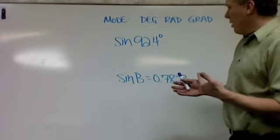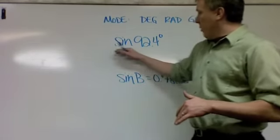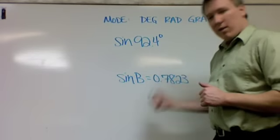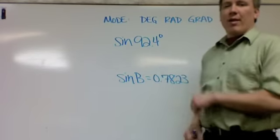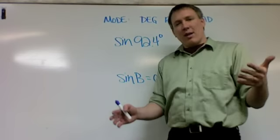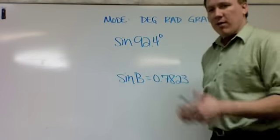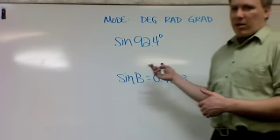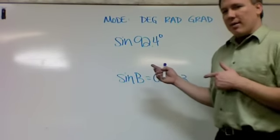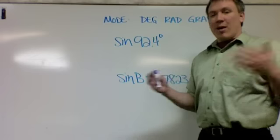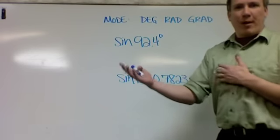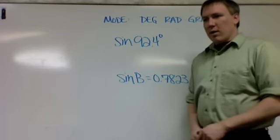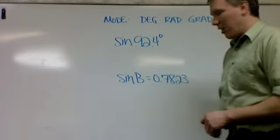So all you need to do is type in, depending on the calculator, either sine, then 92.4, then enter, or 92.4, and then hit the button sine. Depends on the calculator. I know you guys can figure it out. Help each other. It's a very simple process. So this is just a calculator problem. And by the way, the sine of 92.4 is probably .9 something. I'm not going to do it right now, but that is what it is. It's on your worksheet. I don't want to give away the answer.